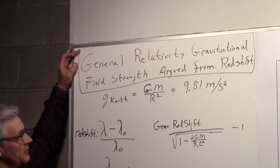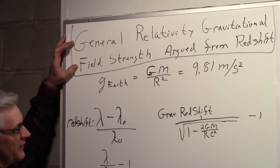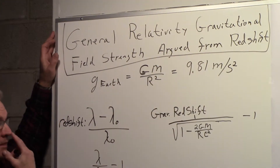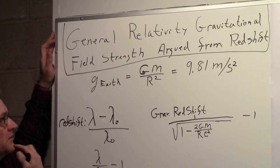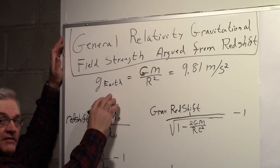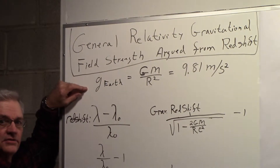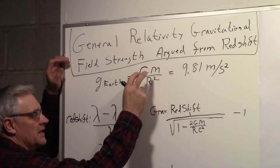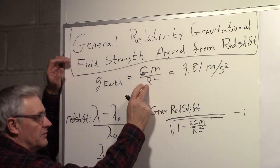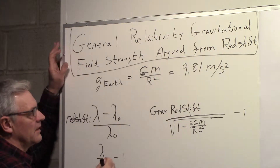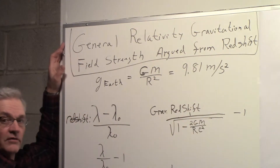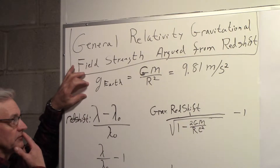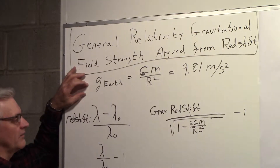I'm going to talk about the general relativity gravitational field strength, and we're going to do an approximation. That's done by arguing from the redshift. So gravitational field strength — everybody's familiar with g, the acceleration due to gravity. For the Earth, g equals G times the mass of the Earth divided by the radius of the Earth squared, which gives the familiar value of 9.81 meters per second squared. That's the gravitational field strength from Newton.